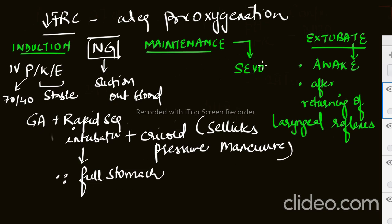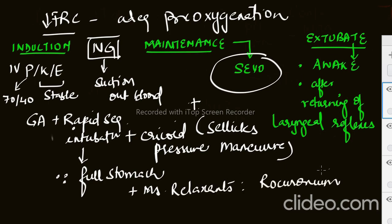In maintenance, we can use sevoflurane. We didn't tell you about muscle relaxants - we can use rocuronium and succinylcholine, either one of them. You also have to suction out the blood. Here I am talking about the suction - it should be done under vision so that you can literally see the clots and then you can remove them.